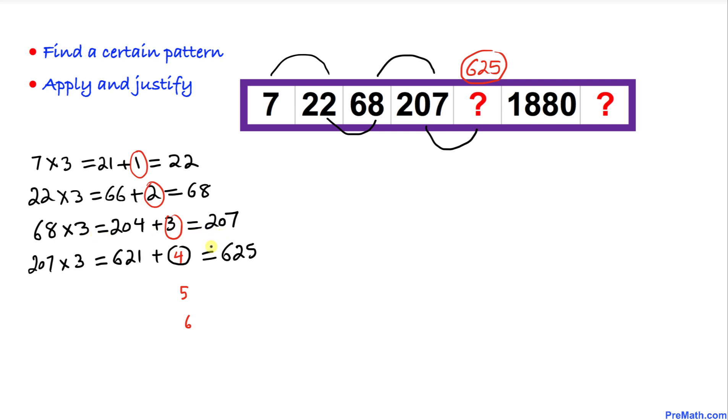And now let's move on furthermore. So I'm going to write down 625 times 3, which is going to give us 1875, and then plus 5 is going to give us 1880.